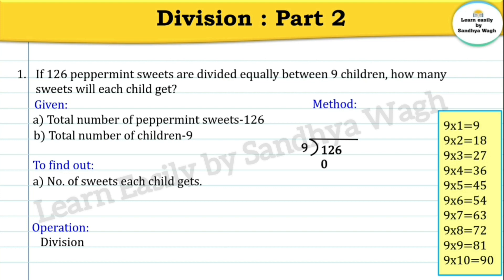9 zeros are 0, so we will write 0 over here and 0 as the quotient. Now let us subtract 0 from 1. The answer will be 1.